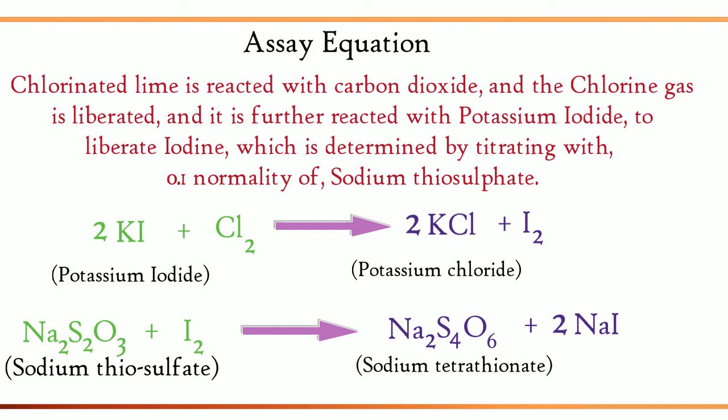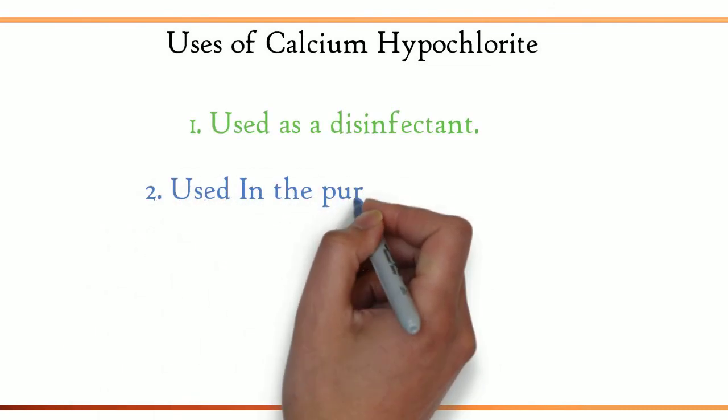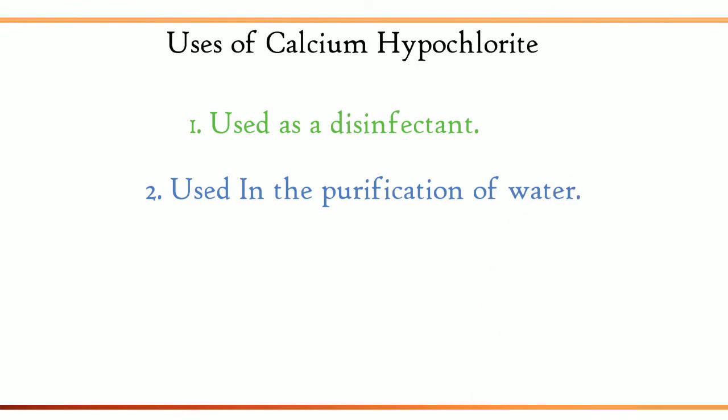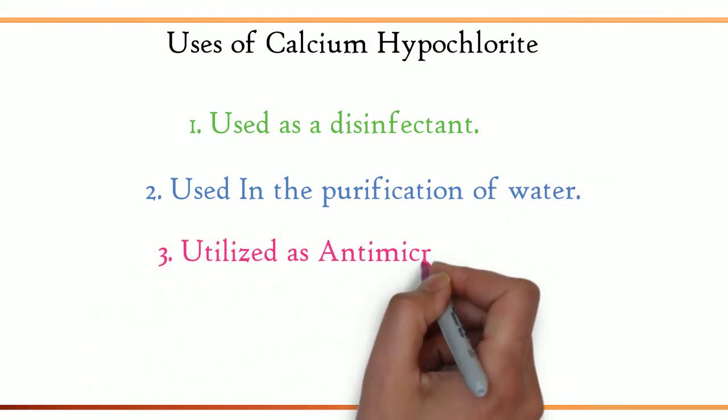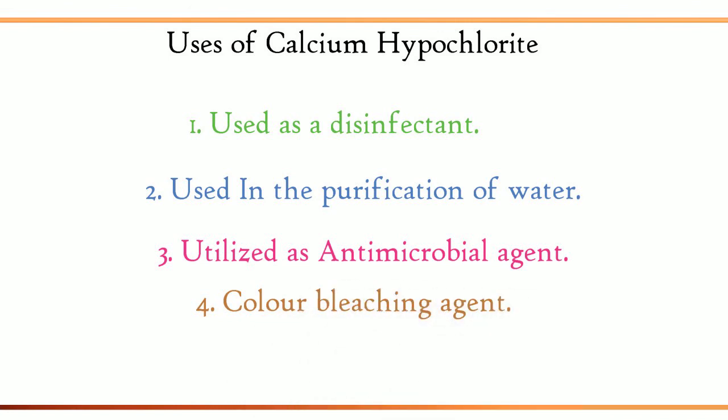At last, uses of calcium hypochlorite. 1. Used as a disinfectant. 2. Used in the purification of water. 3. Utilized as antimicrobial agent. 4. Color bleaching agent.